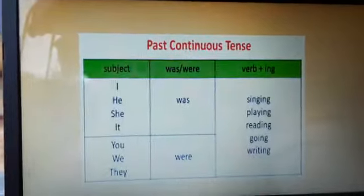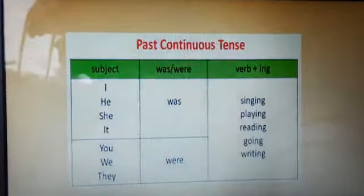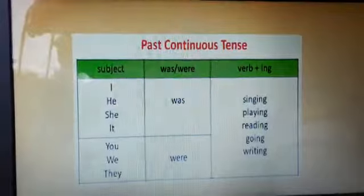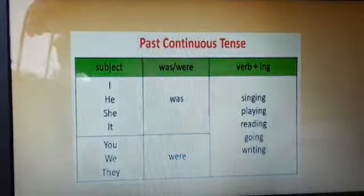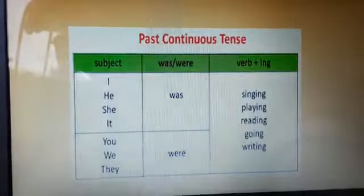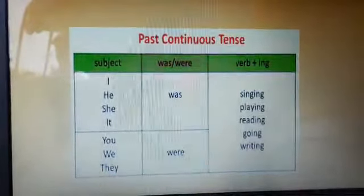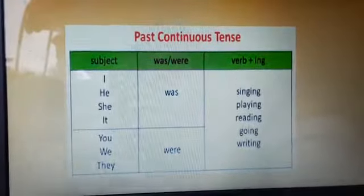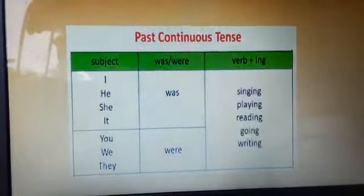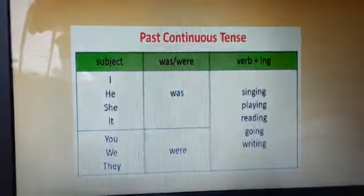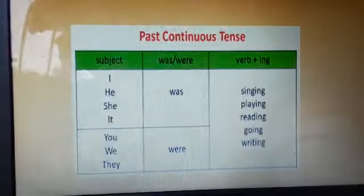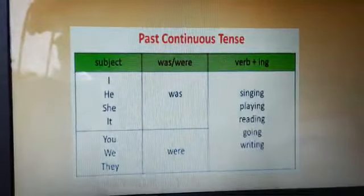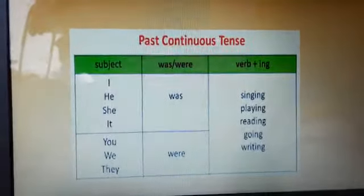The rule says that we use helping verbs 'was' and 'were', and we add '-ing' with the base form of the verb. With all singular subjects we use 'was', and with all plural subjects like you, we, they, their, them — we use 'were'.